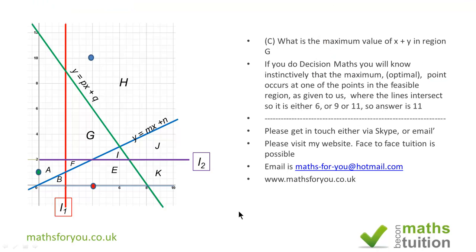This section says what is the maximum value of x plus y in region G. You tend to come across this sort of exercise in decision maths. Generally speaking, the optimal value you find where the lines intersect. For region G there are three such points. The first one is when x is 4 and y is 2, so 4 plus 2 gives me 6. Secondly there is another point where x is 6 and y is 3, so 6 plus 3 gives you 9. There is another point here where x is 2 and y is 9, so 9 plus 2 gives me 11. It will seem that the maximum value is 11.